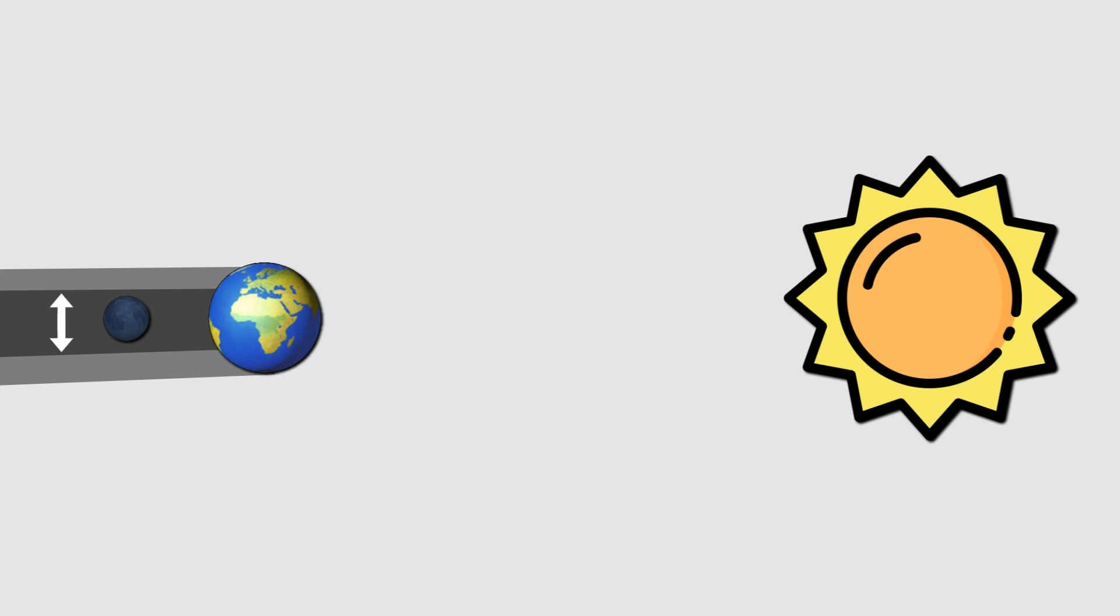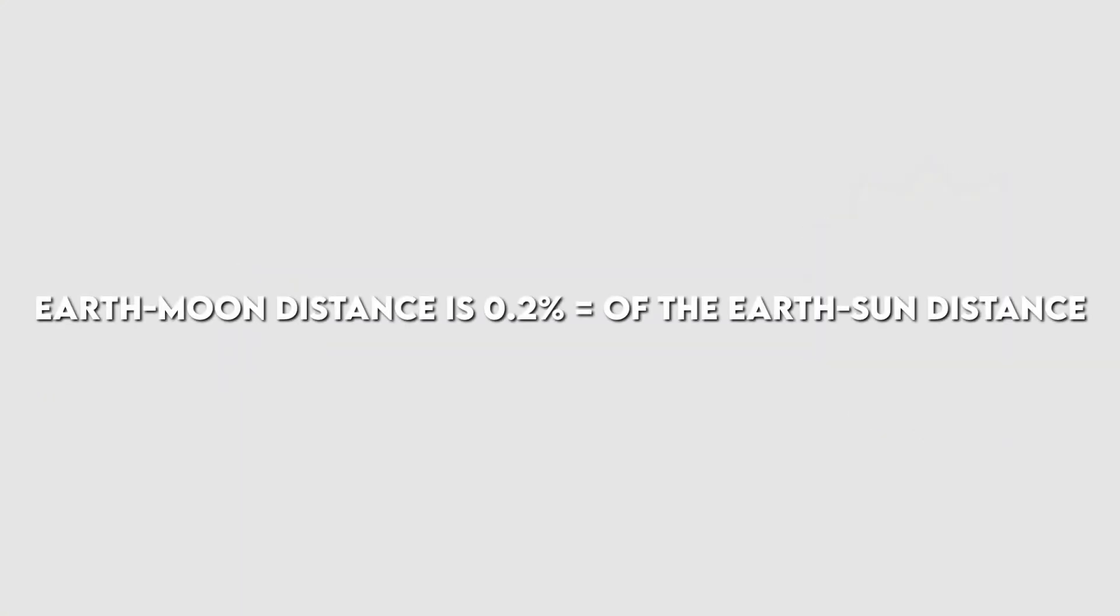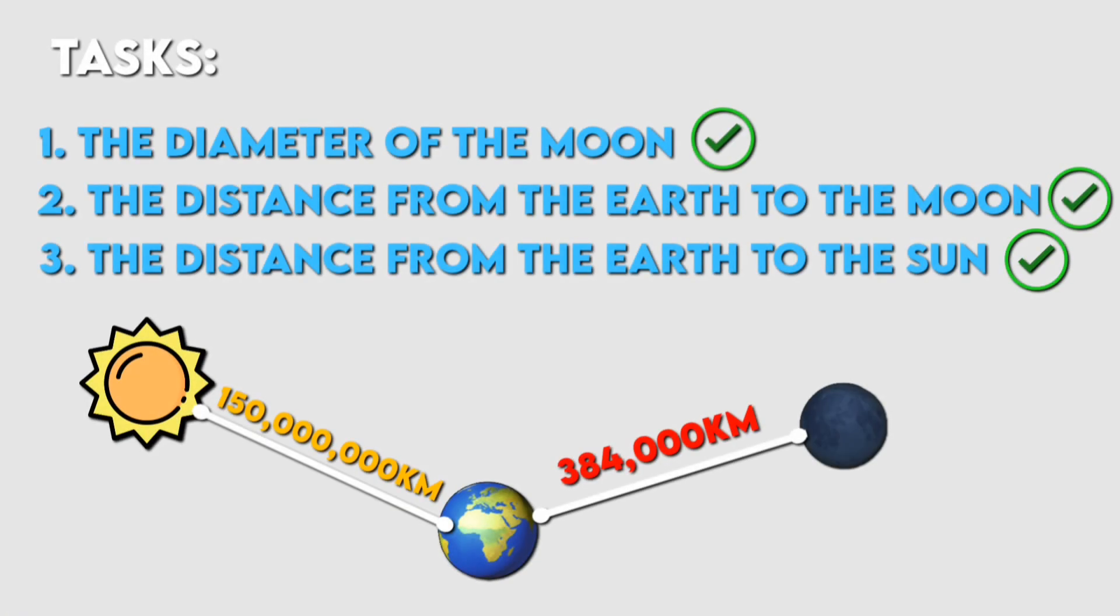Due to this mistake, all subsequent calculations contain some degree of error. In reality, the Earth-moon distance is 0.2 percent of the Earth-sun distance, not 5 percent. Thus, the actual distance from Earth to the sun is 150 million kilometers, not 4 million.